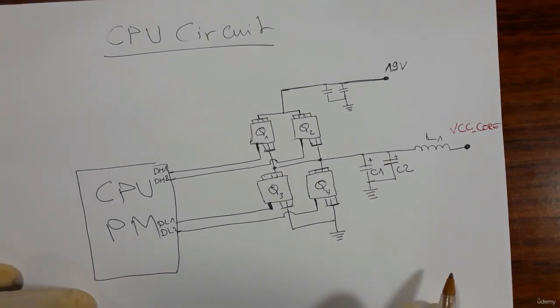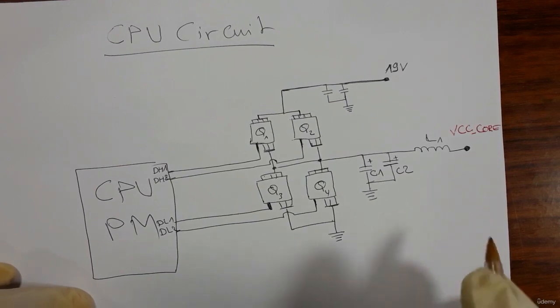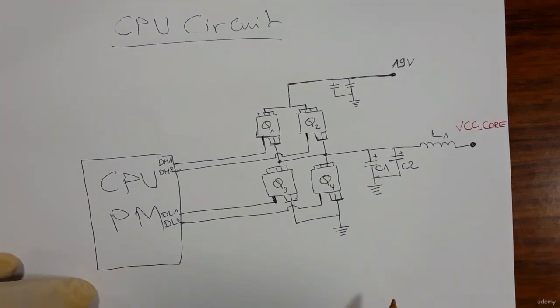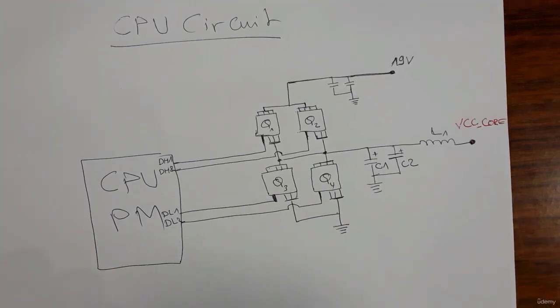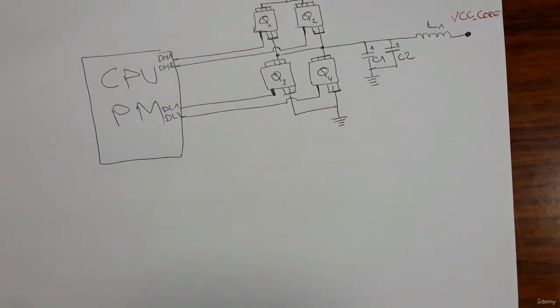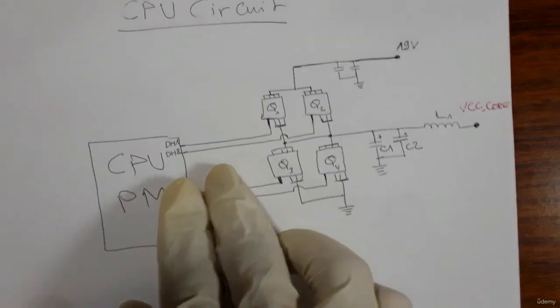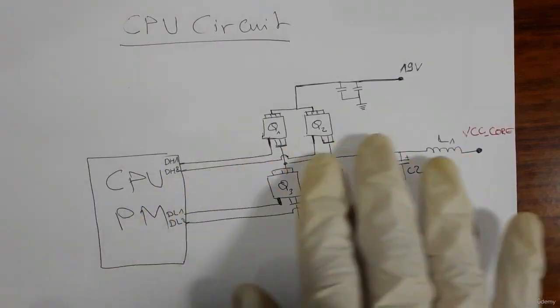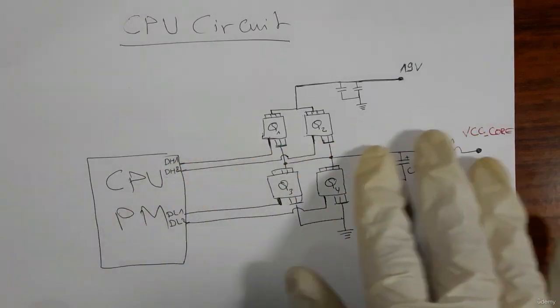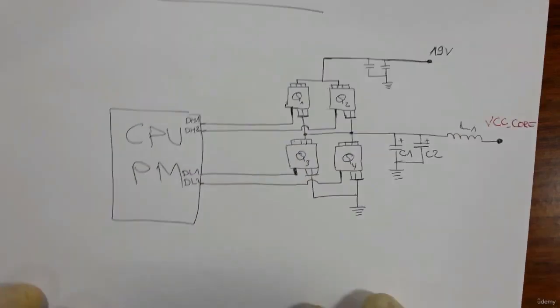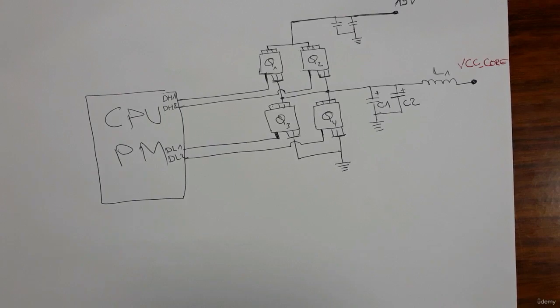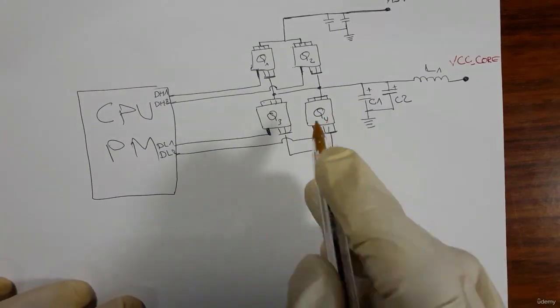The VCC core is the main power for the CPU. This is just the first channel - we have here another channel exactly like this one.